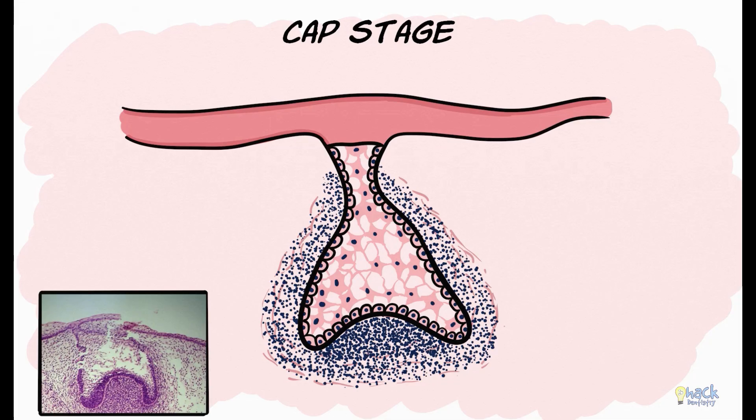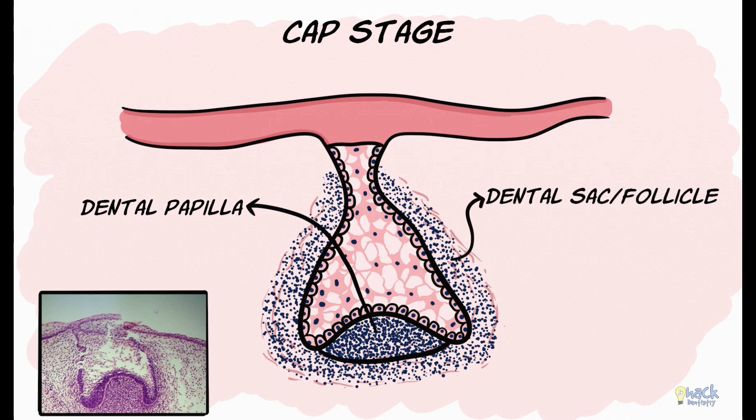The ectomesenchyme cells condensed just below and within the concavity of the cap are called the dental papilla, and the cells surrounding the enamel organ and the dental papilla constitute the dental sac or the dental follicle. The dental papilla would eventually form the dentine and the pulp, and the dental follicle would form the cementum, periodontal ligament, and the alveolar bone.